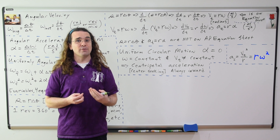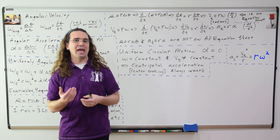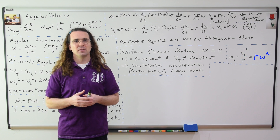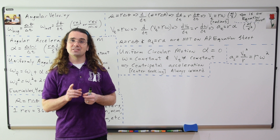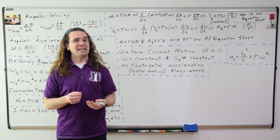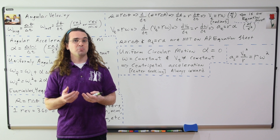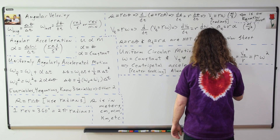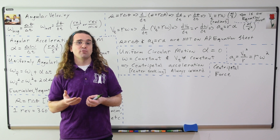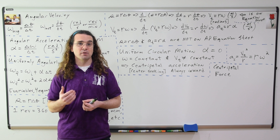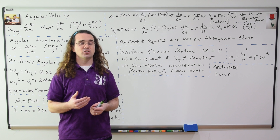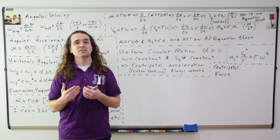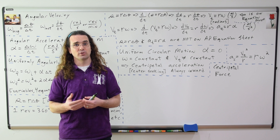The equation for centripetal acceleration is tangential velocity squared divided by the radius of the path the object is describing. It also equals that radius times the angular velocity squared. According to Newton's second law, where there is a linear acceleration there must be a net force. Therefore, if an object is moving in a circle, there must be a centripetal acceleration and there must be a centripetal force.